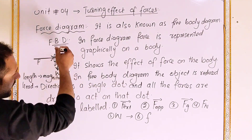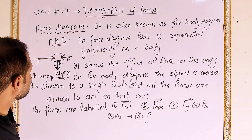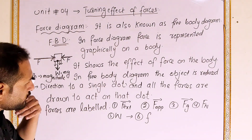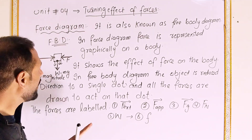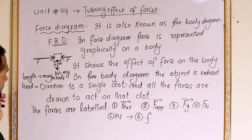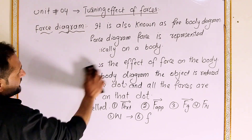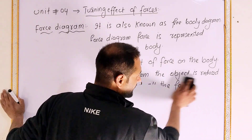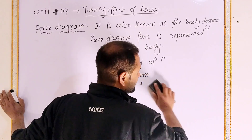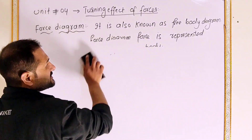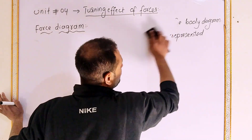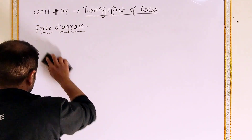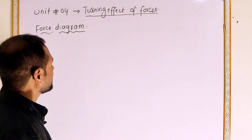The force diagram shows the object and the direction in which forces act. If forces are different in direction, they may or may not balance. Balanced forces are forces whose net result is zero.